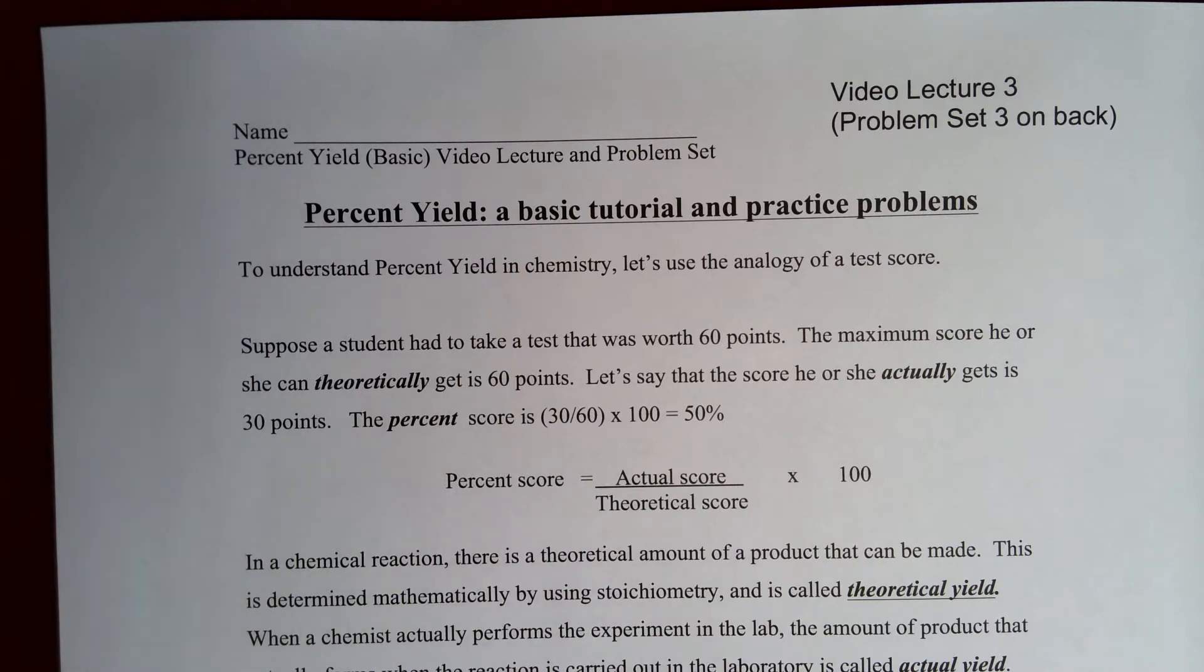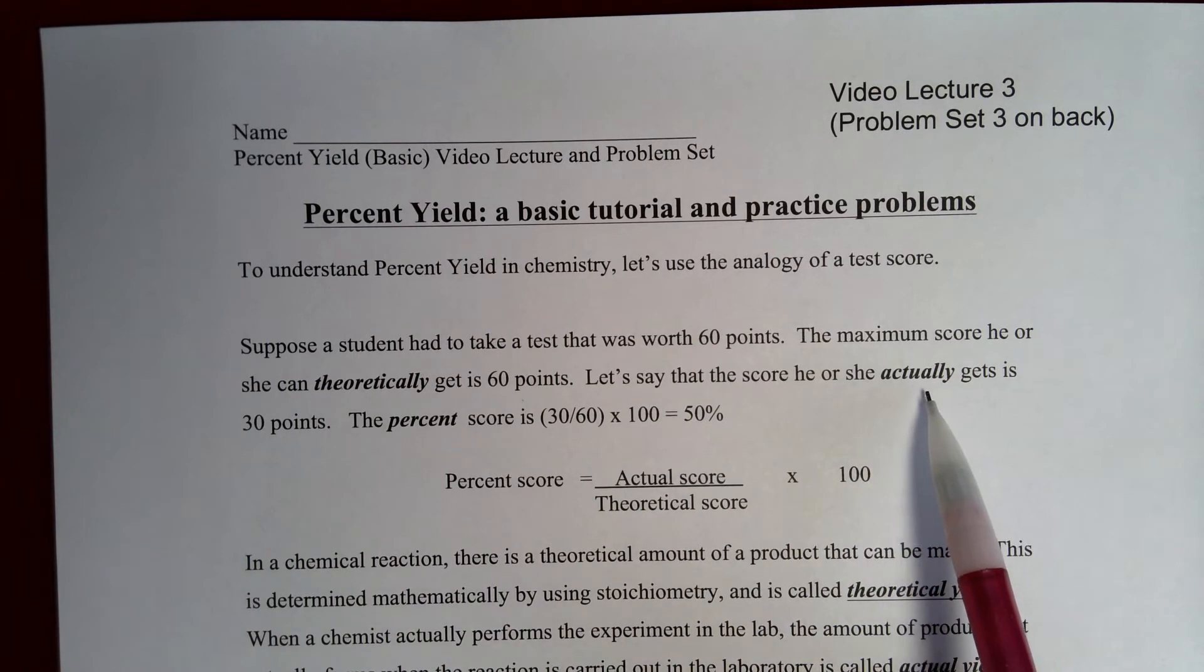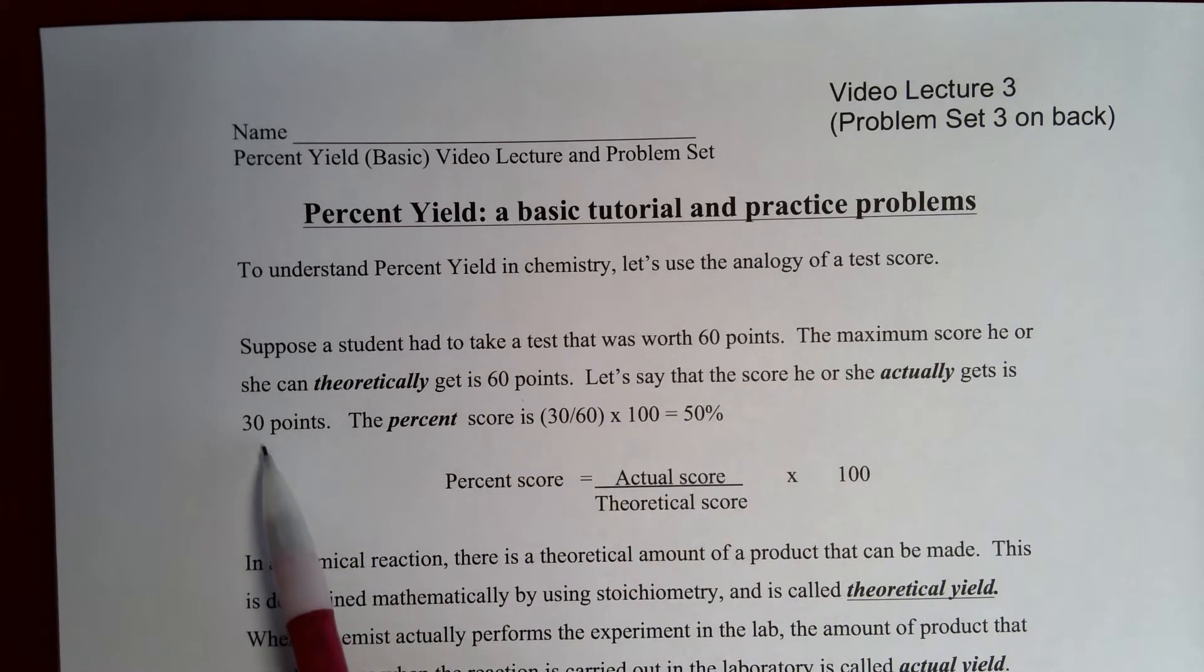So let's say you had a test that was worth 60 points, and the maximum score you could theoretically get is 60 points, right? But let's say the student actually gets a score of 30 points. So the student did not do terrifically well, but they got half the information, right? So you know that percent score is 30 out of 60 or 50%.